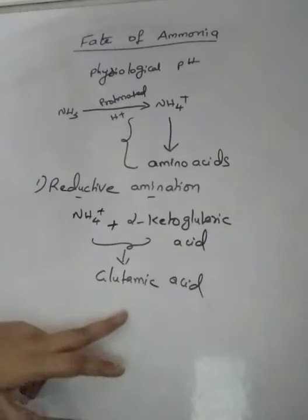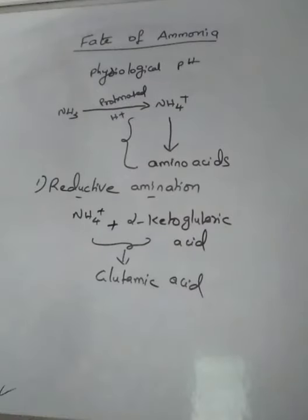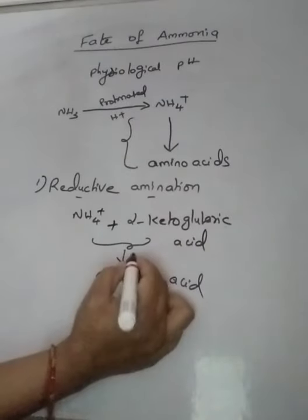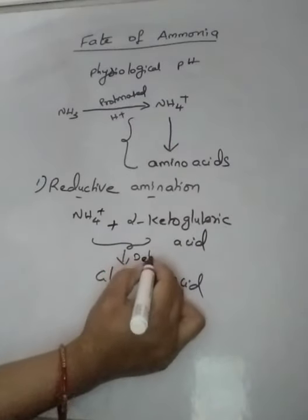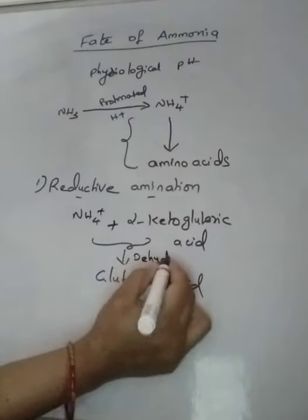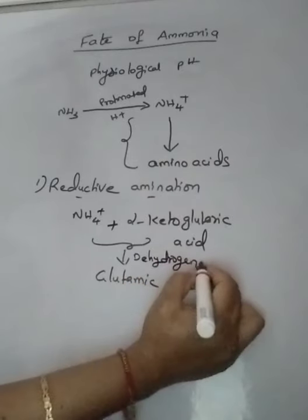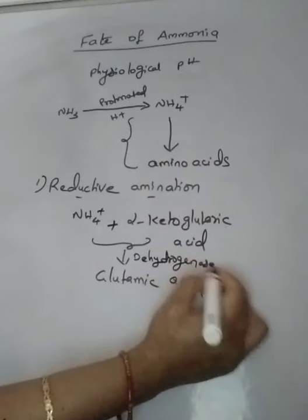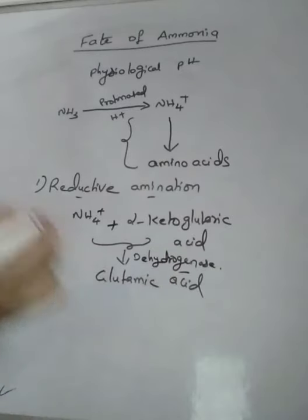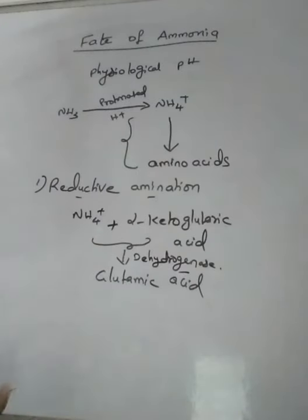Glutamic acid is formed in the presence of dehydrogenase enzyme, because this is a reduction step. The dehydrogenase enzyme participates and performs the reductive amination reaction.